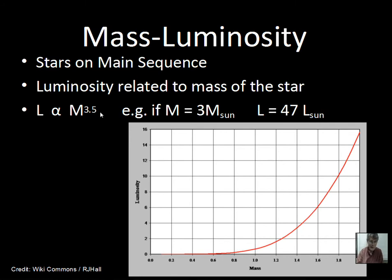For easy approximations: if the mass is three times the sun and luminosity is proportional to mass cubed, we get 3×3×3 = 27 solar luminosities. If proportional to mass to the fourth, we get 3×3×3×3 = 81. At the actual 3.5 power, I've calculated with a calculator that luminosity would be about 47 times the luminosity of the sun.